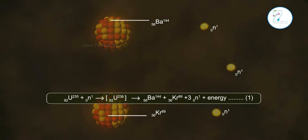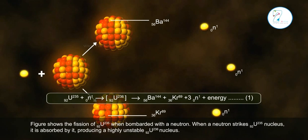The figure shows the fission of 92U235 when bombarded with a neutron. When a neutron strikes the 92U235 nucleus, it is absorbed by it, producing a highly unstable 92U236 nucleus.